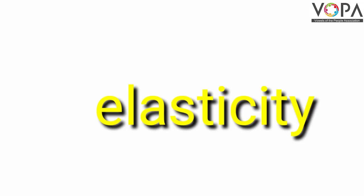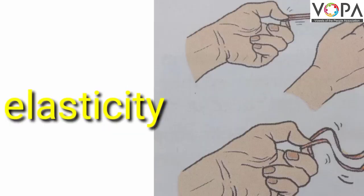Third property is elasticity. Look at this rubber band. Some substances change their shape when a force is applied on them, but return to their original shape and size when the force is removed. This property is called elasticity.